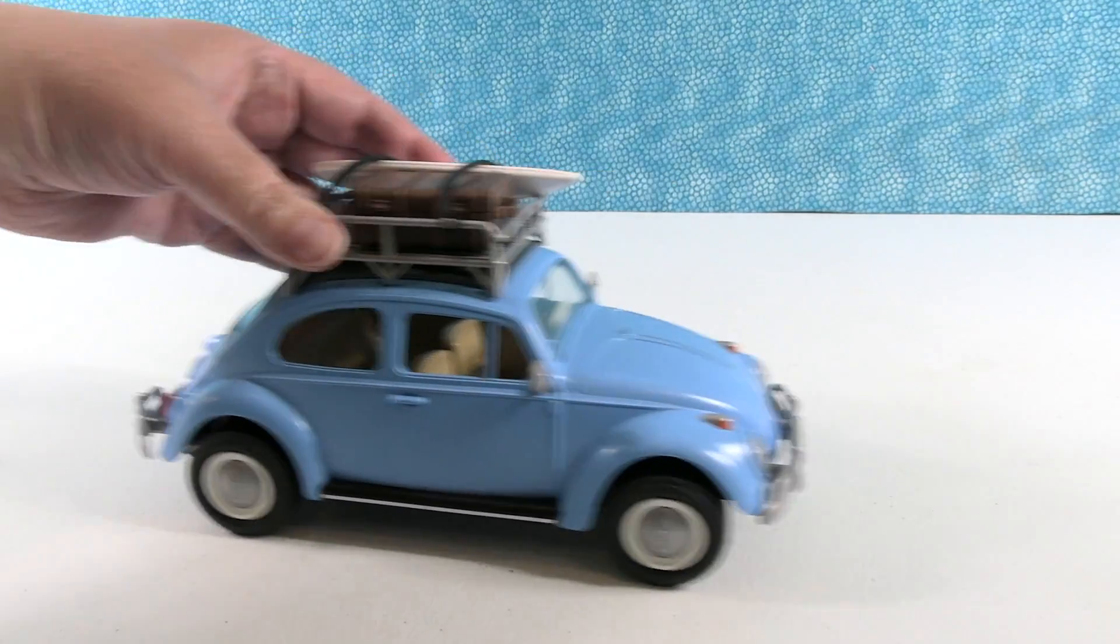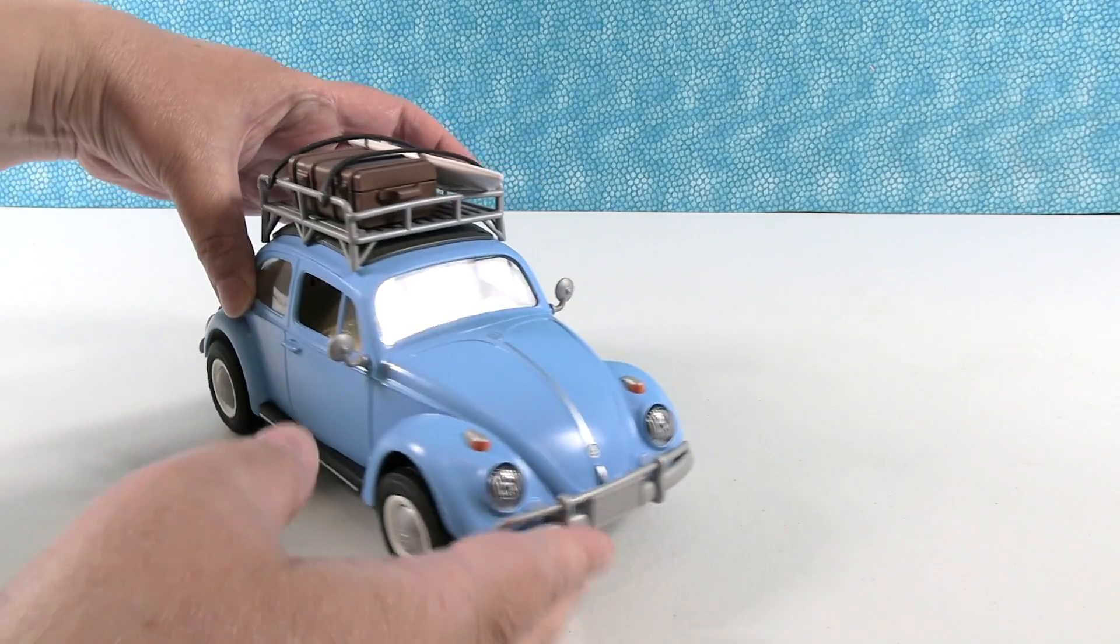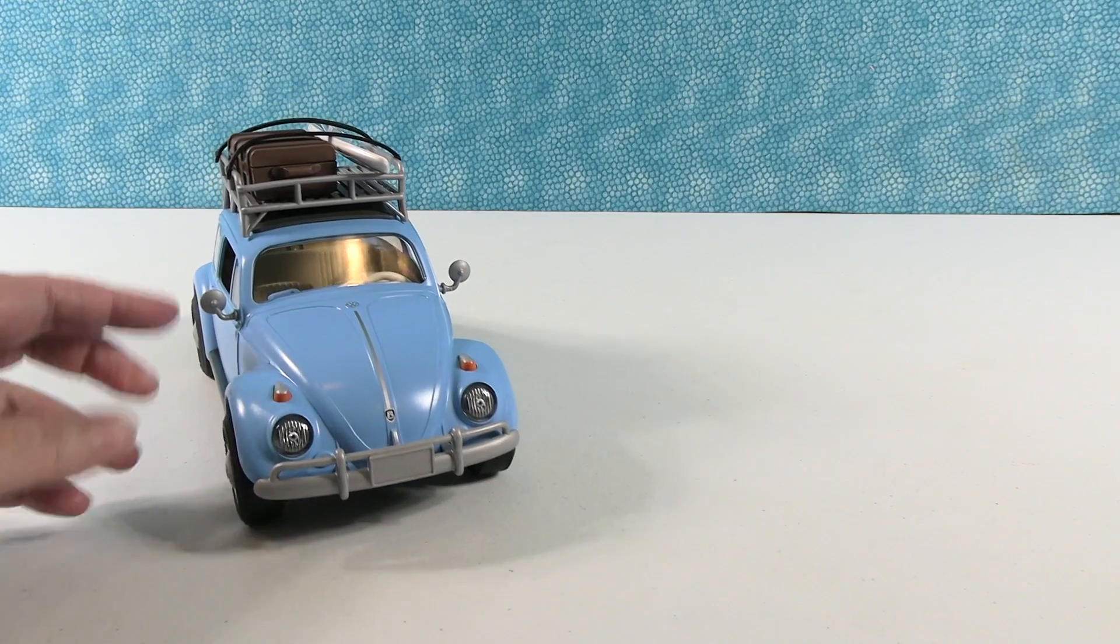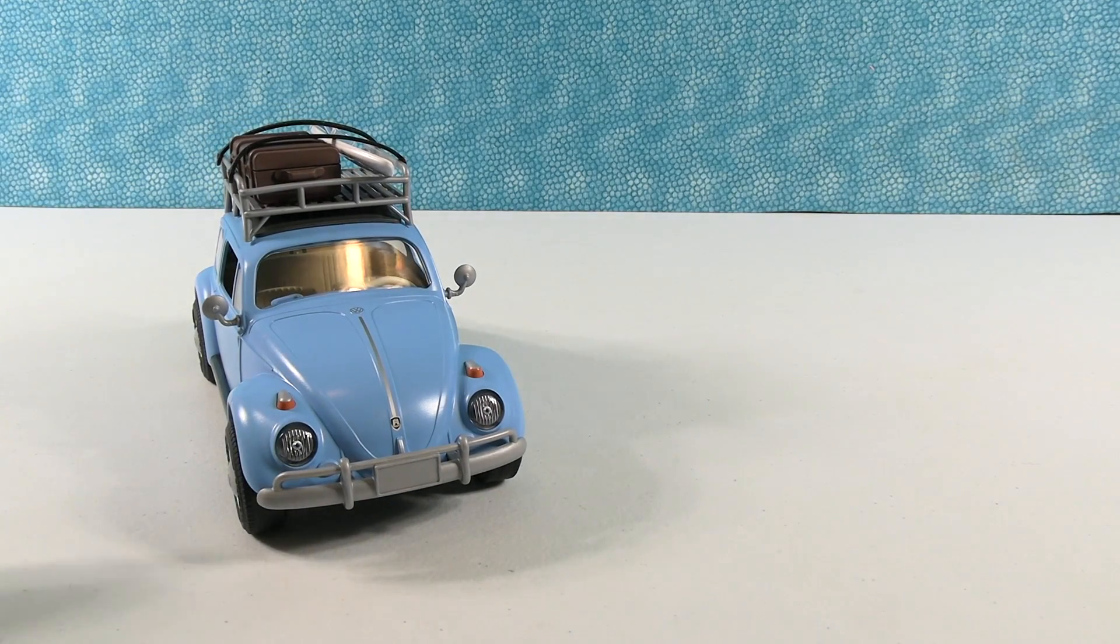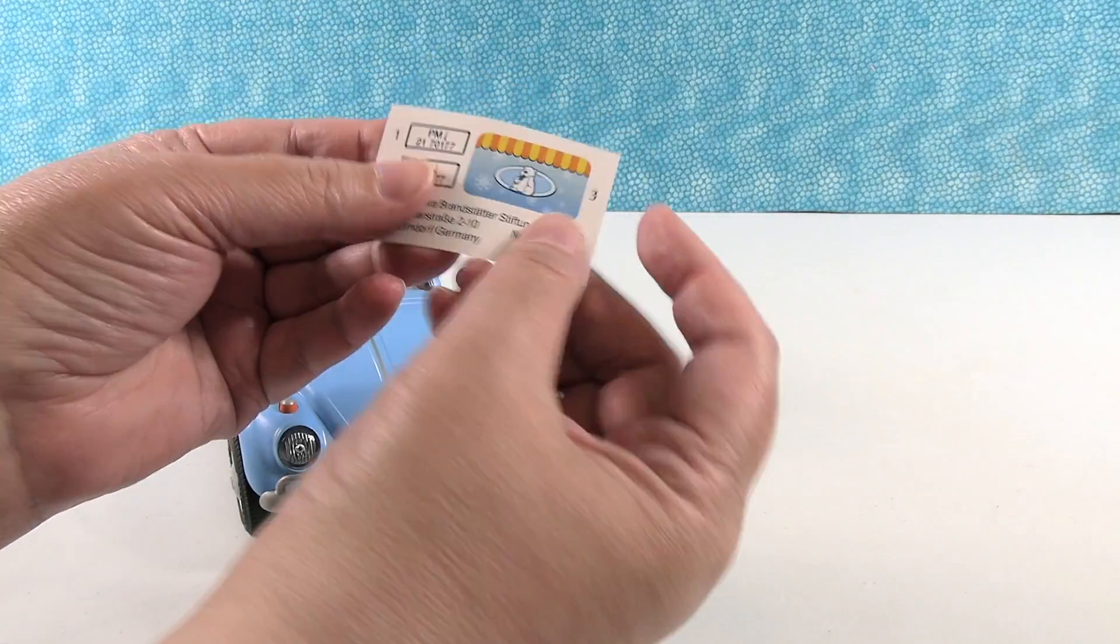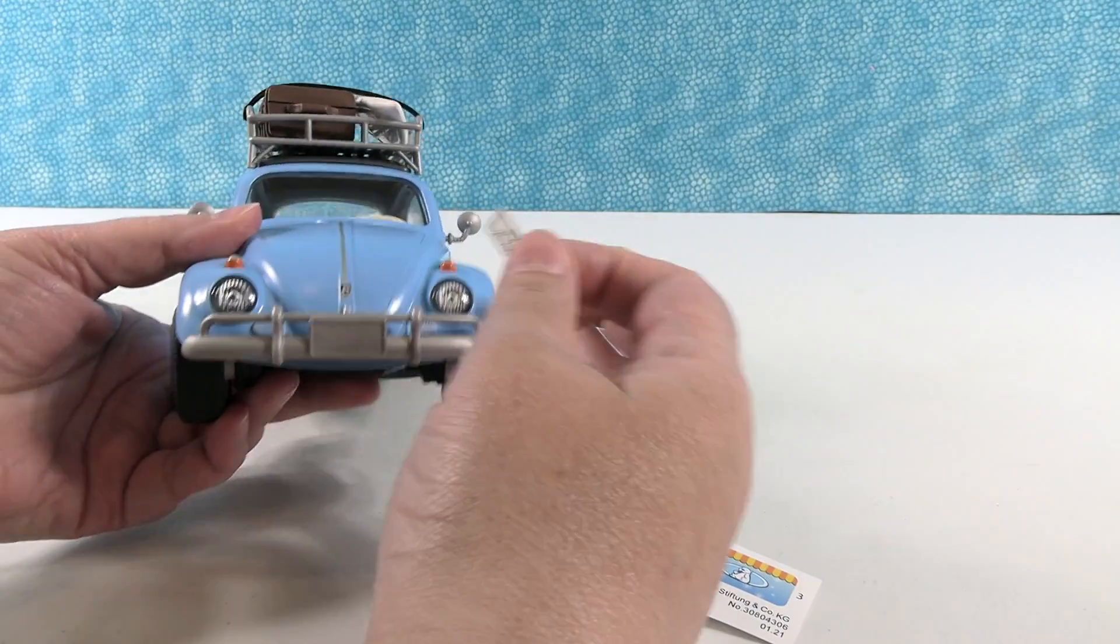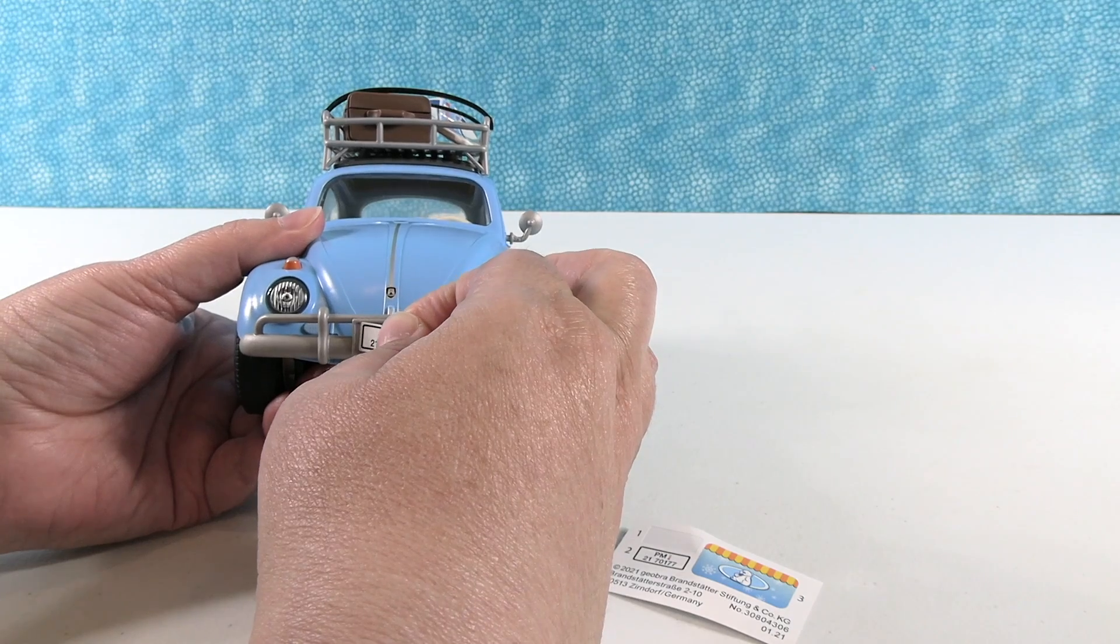Oh, it rolls nice too. So these actually roll and it is really highly detailed. I mean, this looks exactly like the Beetle. Now I told you I was going to tell you a little story. I'm going to do that while I put the stickers on here. I guess I should have done that before I put the luggage on, but we're going to put the license plate stickers on the vehicle here.